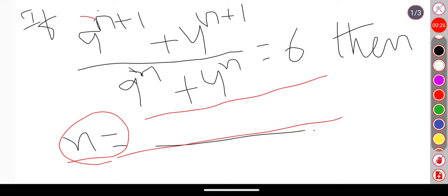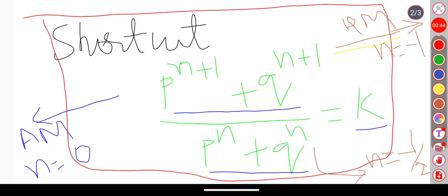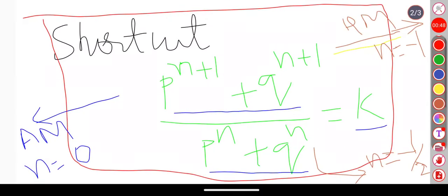We have one shortcut present. The shortcut is p^(n+1) plus q^(n+1) whole divided by p^n plus q^n equals k.